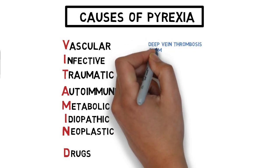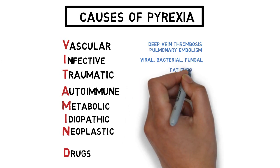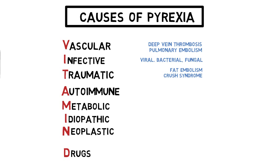Deep vein thrombosis and pulmonary embolism are examples of vascular disease — blood thrombi are considered foreign by immune cells, making them endogenous pyrogens. Any viral, bacterial or fungal infection can cause fever as exogenous pyrogens. Fat embolism or crush syndrome are common complications of fracture and trauma — in fat embolism, yellow marrow from long bones is dislodged and considered foreign by the immune system.